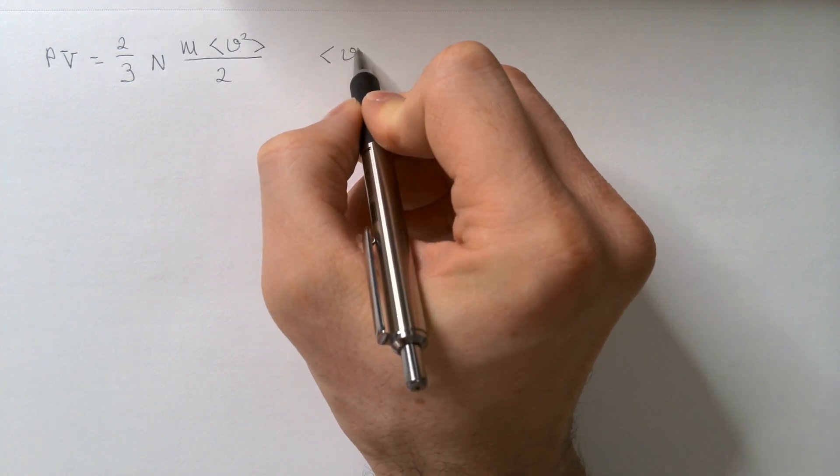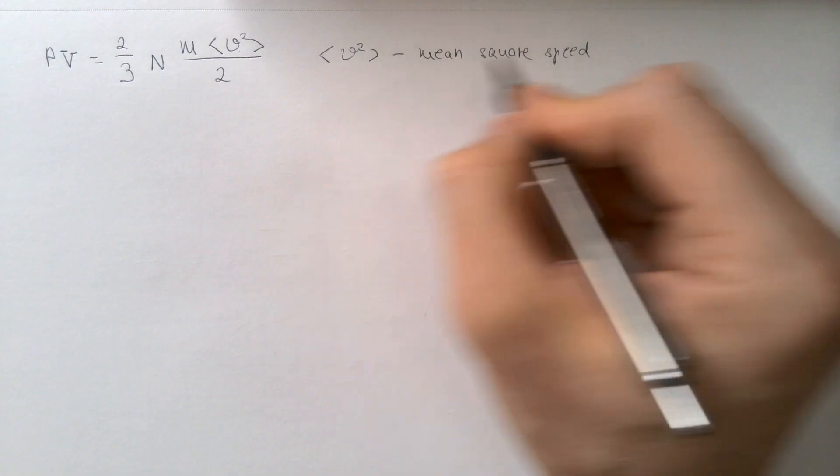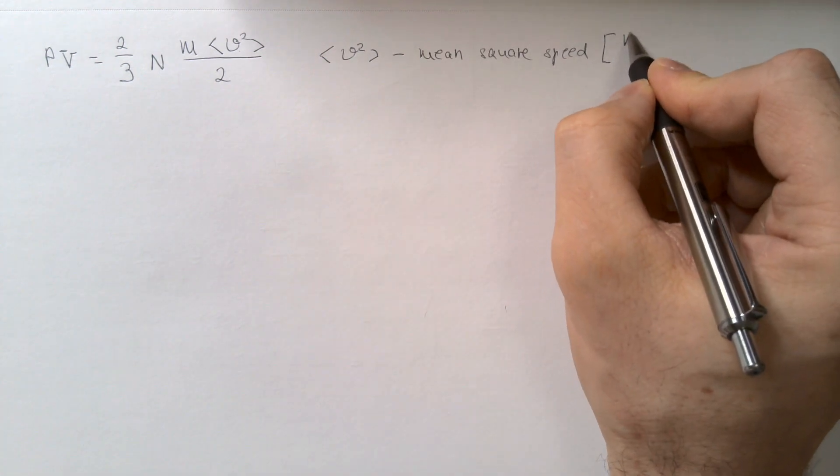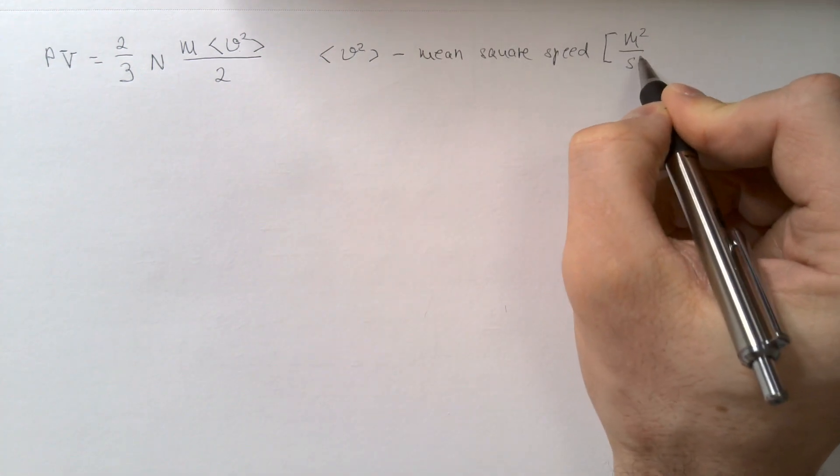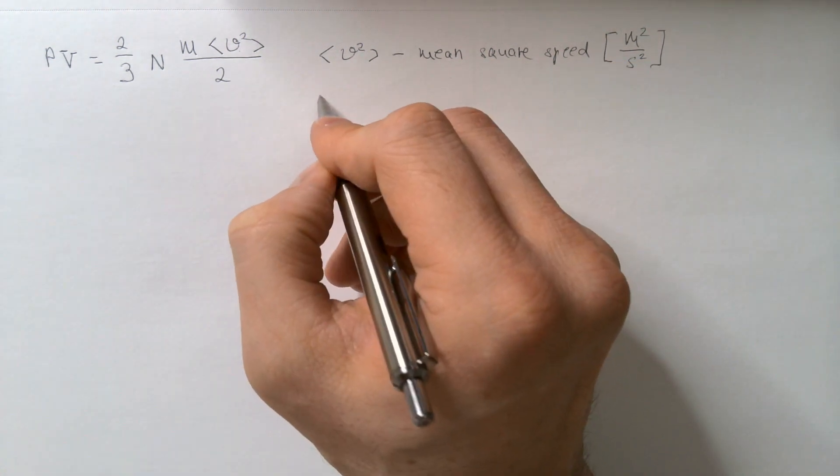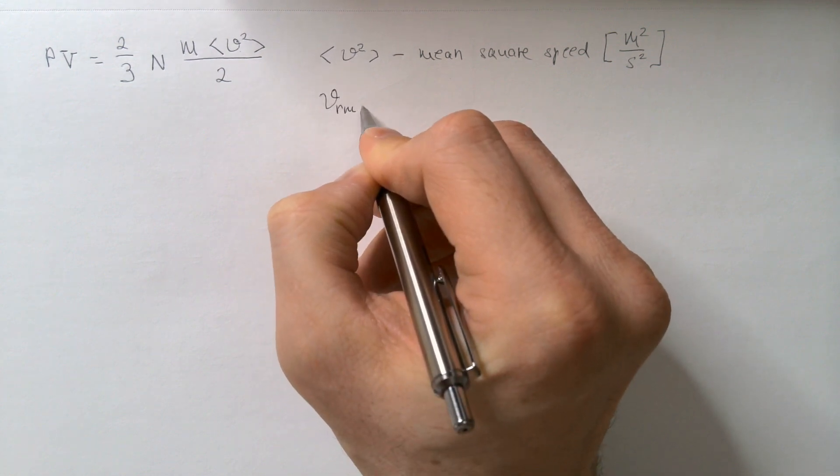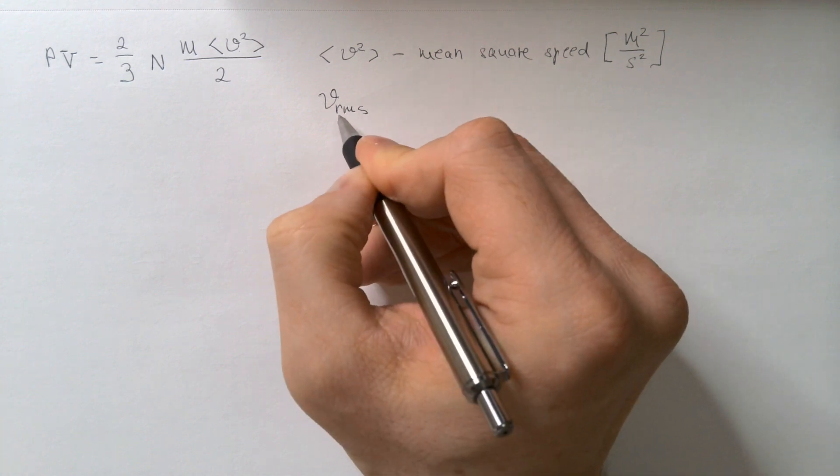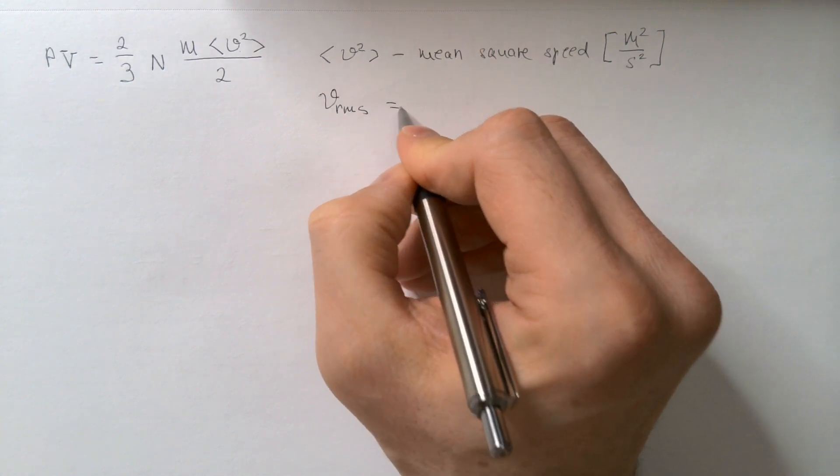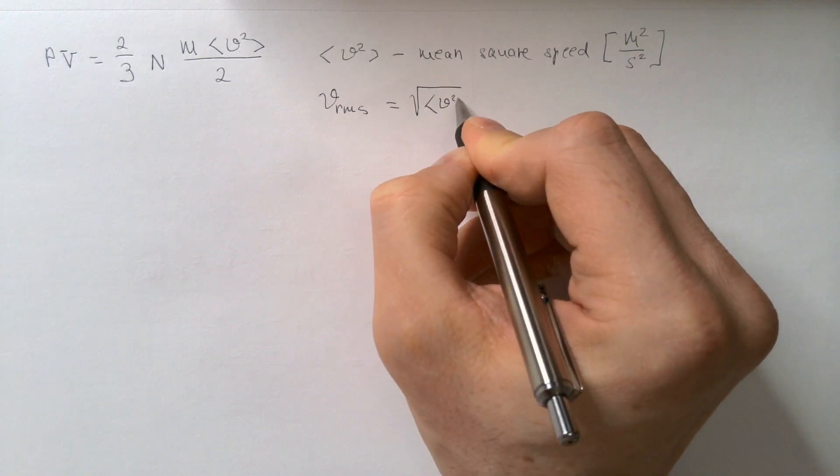This is called mean square speed, and units are meters squared per second squared. So to call something speed and really have units of speed, we take square root of this. So V RMS, root mean square, is therefore equal square root of this quantity over here.